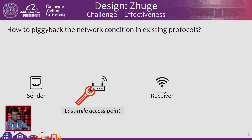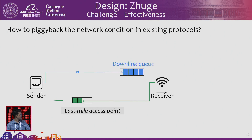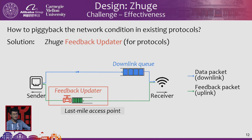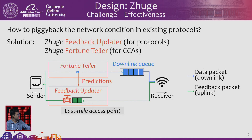Our solution has two folds, presented from the view of the access point. The access point connects to the sender via the internet and to the receiver via the wireless link — it acts as a converter between the two. In the downlink direction there is a data path from sender to receiver, and in the uplink direction there is data from receiver back to sender. Our solution includes a feedback updater to carry congestion information back using existing protocols, and a fortune teller to determine what information to notify the sender.